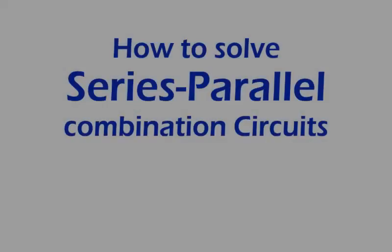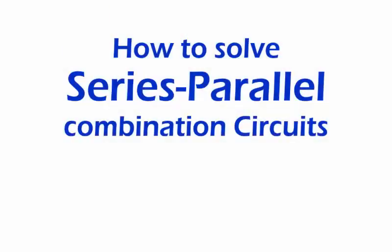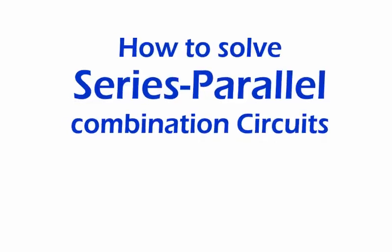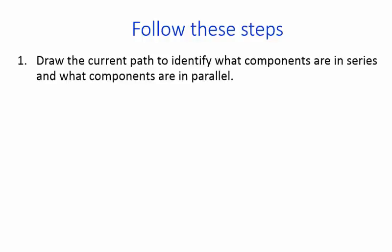This video will show how to solve series parallel combination circuits for electronics. The easiest way to do this is if you follow these simple steps. First, draw the current path through the circuit to identify what components are in series and what components are in parallel.